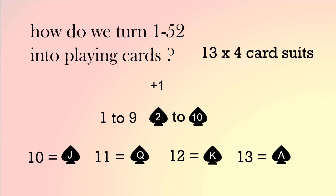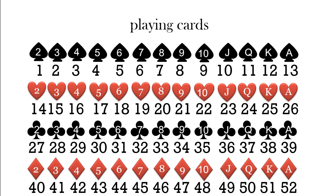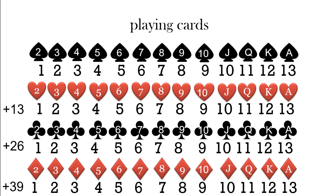We have two, three, four up to ten — that covers numbers one to nine — and then jack, queen, king, ace are ten, eleven, twelve, thirteen. So we've got 13 cards times four suits. All of the playing cards have numbers one to 52, and numbers one to 13 repeat four times. Since the suit doesn't make any difference, so long as we use numbers one to 13 that's all we need, repeated four times for the suits.